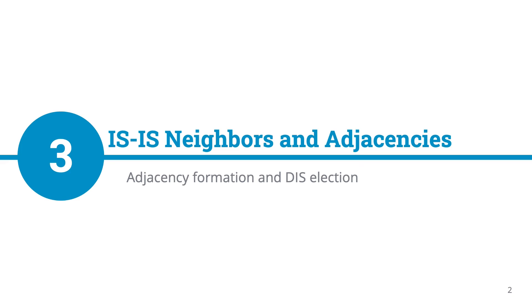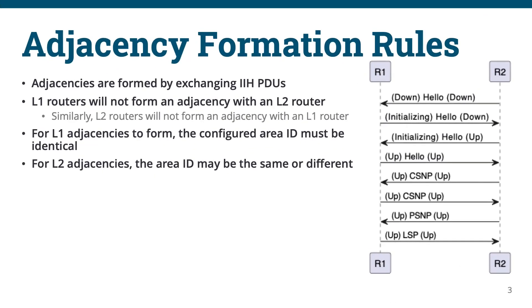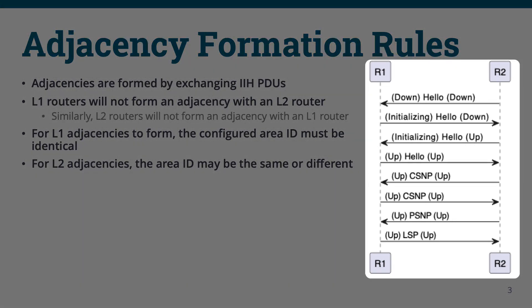In this lesson, we'll review those rules and the process the devices follow to establish the adjacency and exchange routing information. Let's take a closer look at the rules and state machine for ISIS adjacency formation. In the diagram on the right, we see the adjacency formation process and neighbor states that R1 and R2 will see each other as during the process.